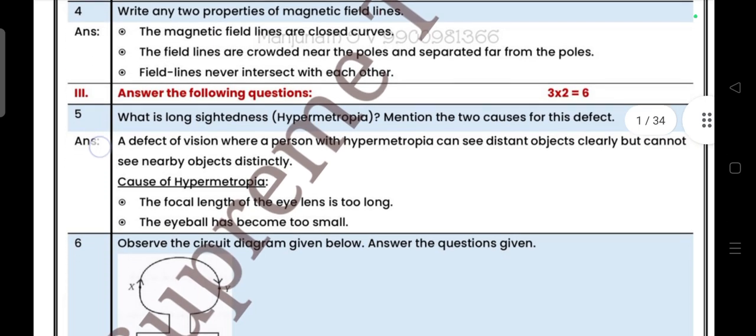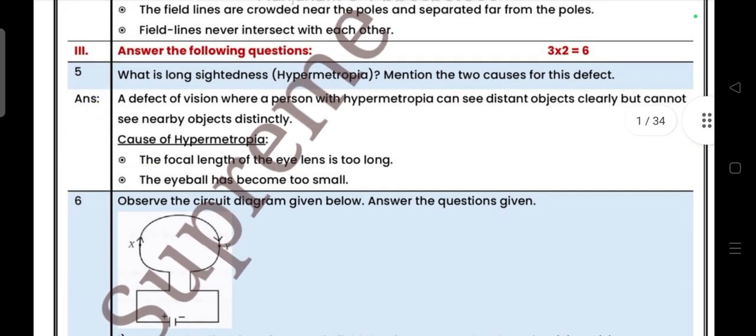Next, answer the following question, three questions. What is long-sightedness hypermetropia? Mention the two causes for this defect. The defect of vision where a person with hypermetropia can see distant objects clearly but cannot see nearby objects distinctly. The causes: the focal length of the eye lens is too long, the eyeball has become too small.